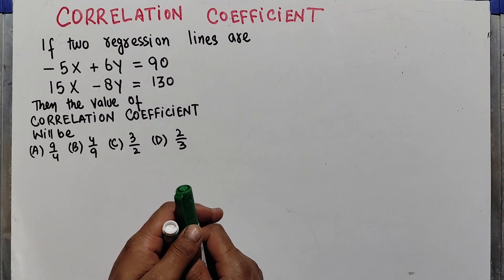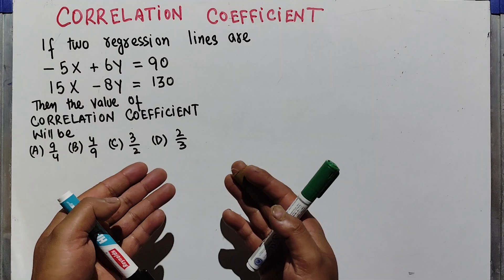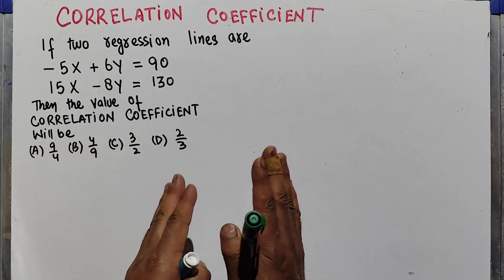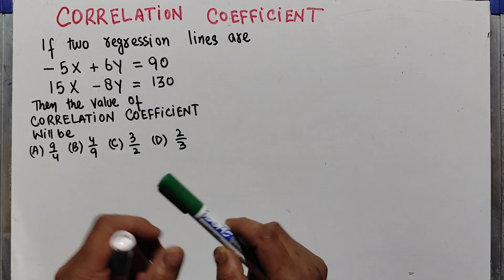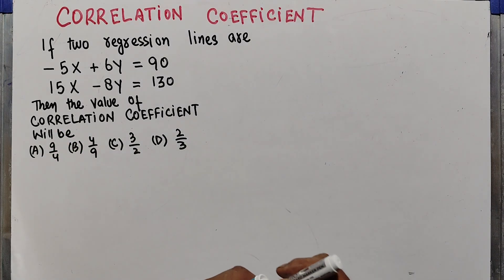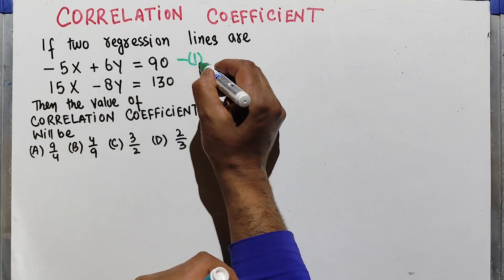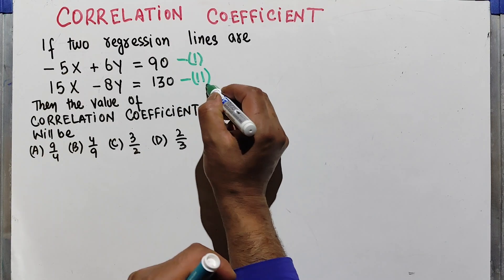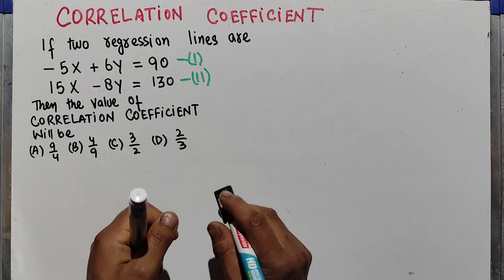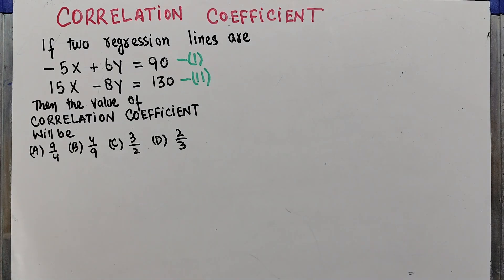The correlation coefficient shows the strength of the linear relationship between two variables. To solve this question, let's label the first equation as equation one and the second as equation two. The first step is to find out the regression coefficients.